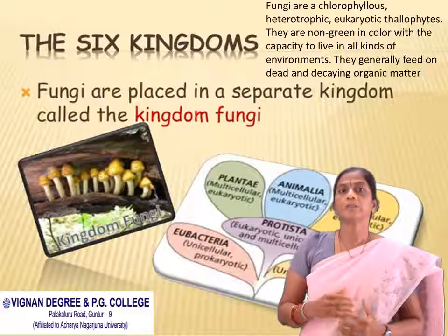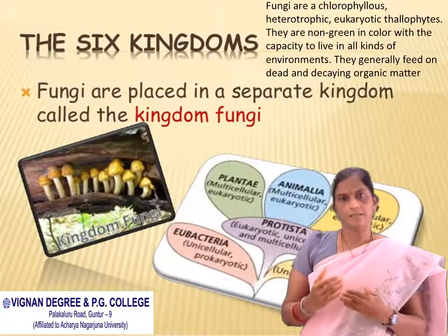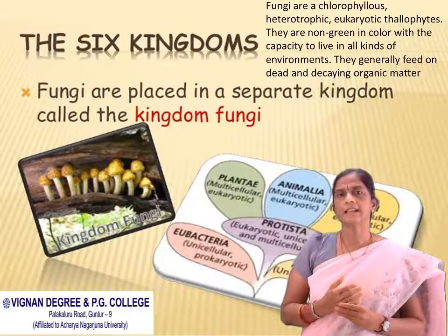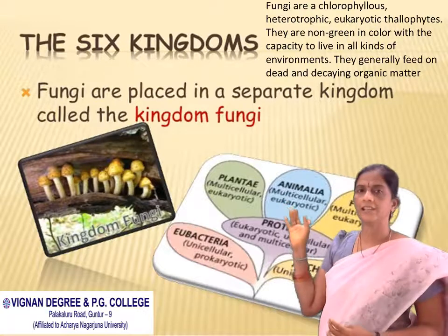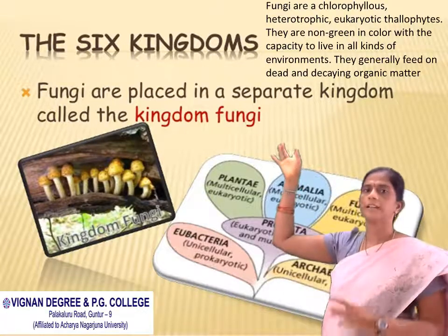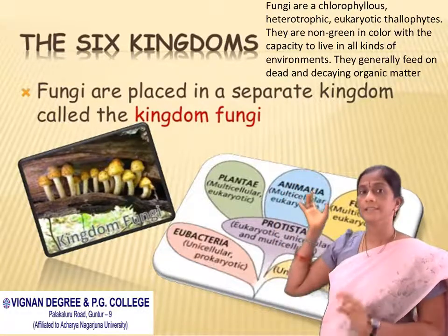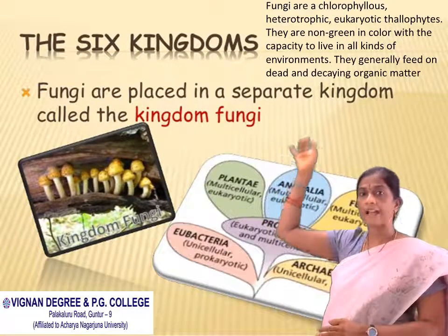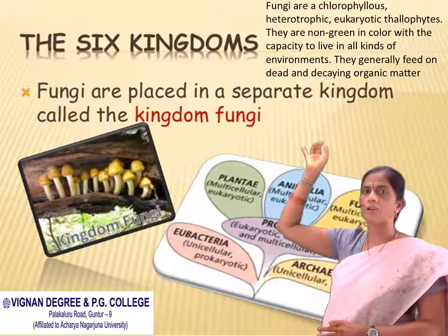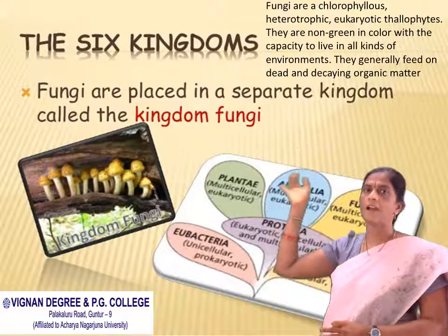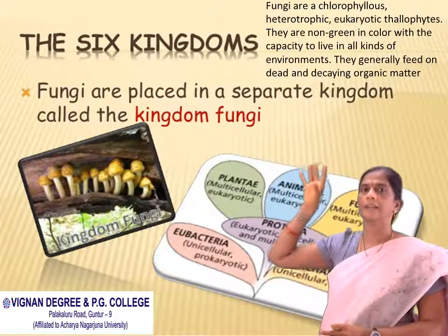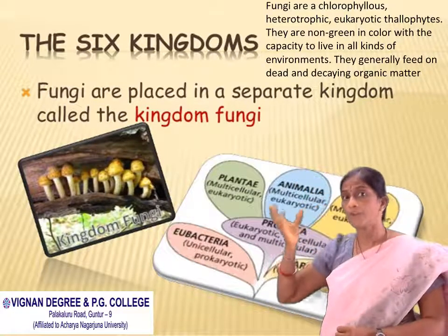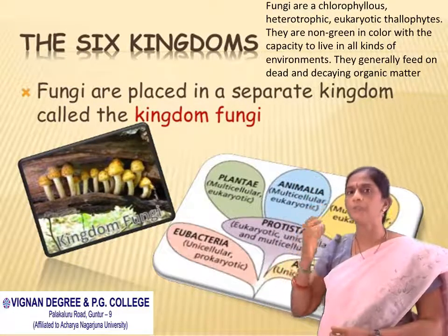Coming to the kingdom — fungi are placed in a separate kingdom called Kingdom Fungi. In the six-kingdom classification, there are Plantae, Animalia, and Fungi. These are multicellular eukaryotic organisms. Fungi are achlorophyllous, heterotrophic, eukaryotic thallophytes.